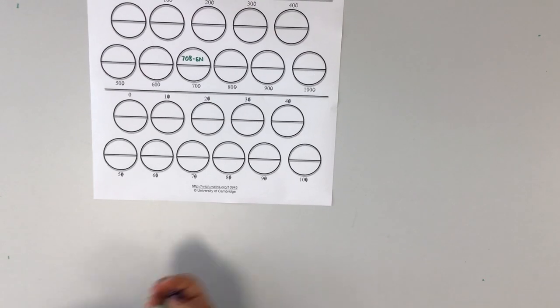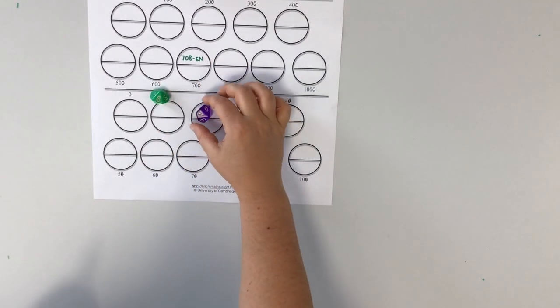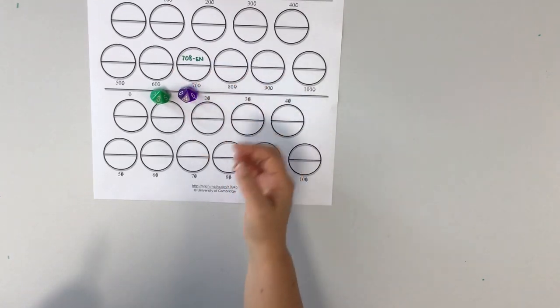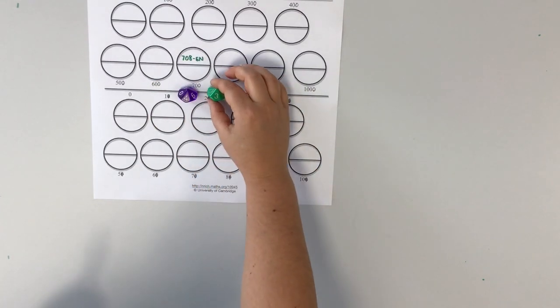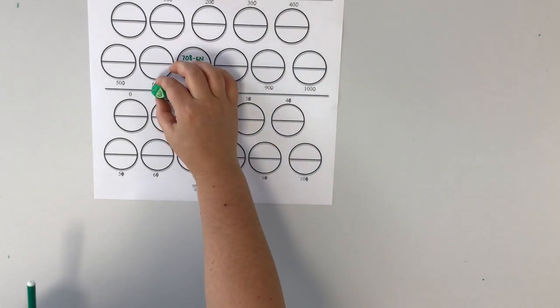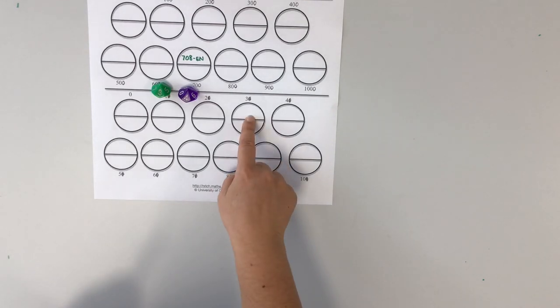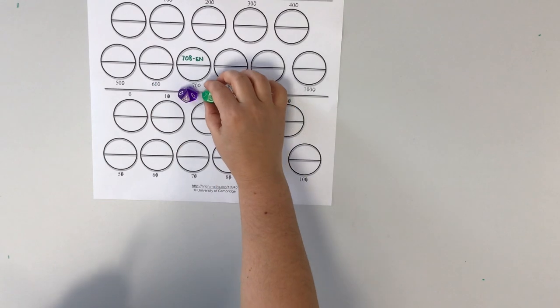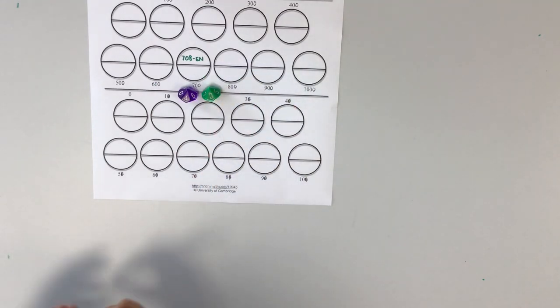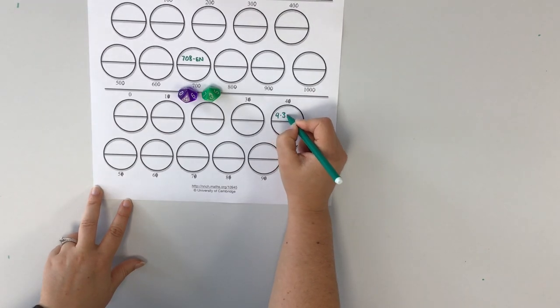And for the decimals, it's exactly the same. We roll two dice, and then we choose this could either be 3.4 or it could be 4.3. So if it was 3.4, it would lie between 3 and 4, and it would round down to 3, so it would go in the 3 circle. If it was 4.3, it would round down to 4, so it would go in the 4 circle.